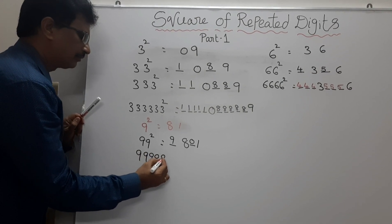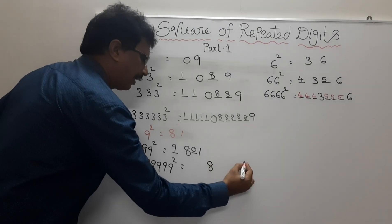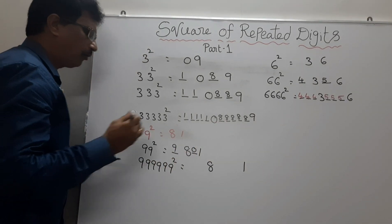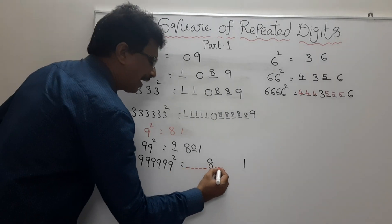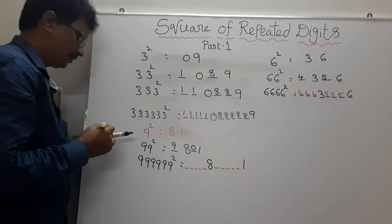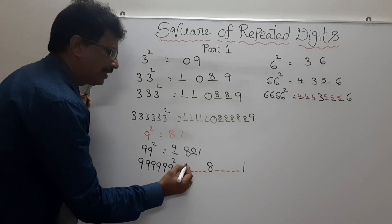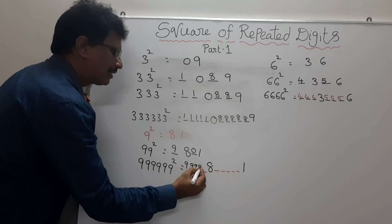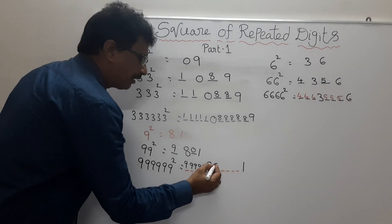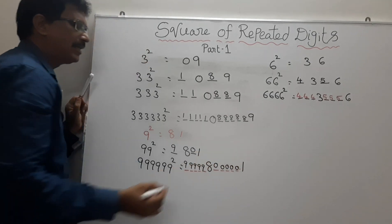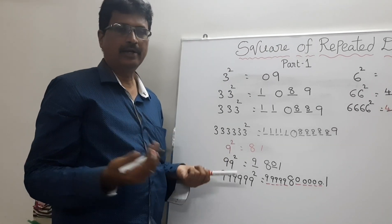Suppose there are 6 nines. 9 squared equals to 81. Here there are 6 digits, so we have to insert 5 blanks before 8 and 5 blanks after 8. Now we want to fill these blanks. Here this is 8, so we have to add 1: 8 plus 1 is 9 — keep five 9's. Here this is 1, subtract 1: 1 minus 1 is 0 — write five 0's. So in this manner we can find the squares of repeated digits. Here, there are 10 digits or more — we can do the same process.